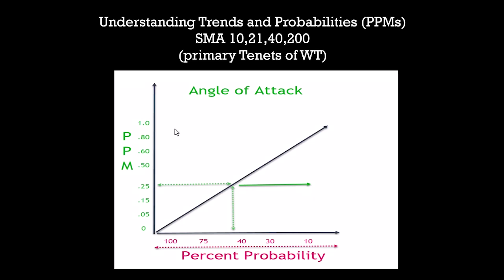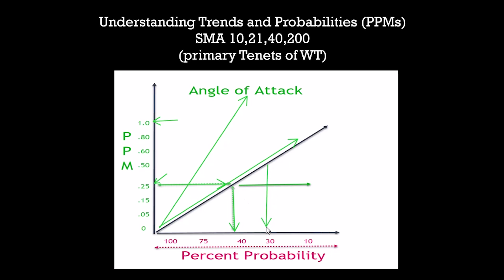As we look at this chart, you can see this angle of attack. Sometimes when it gets here, you'll see more of a parabolic move, and these numbers are your whole integer. A 0.25, shown here with this horizontal line, is where a trend level happens. When that happens, if you look down at the probability chart below, it's around 35 to 40 percent. The higher the PPM goes, the lower the probability that the market will be able to penetrate.